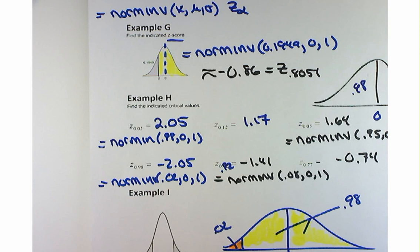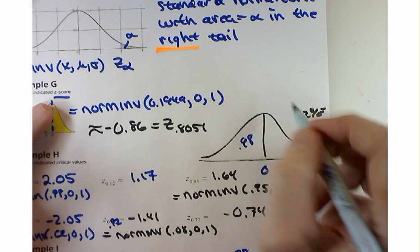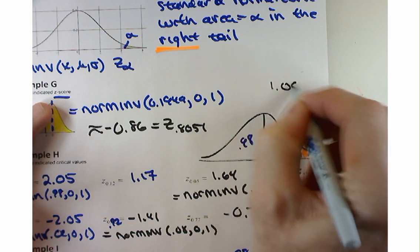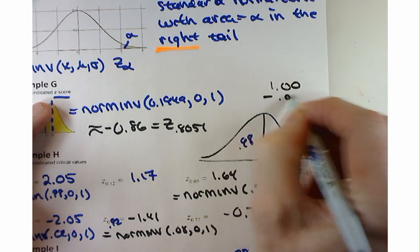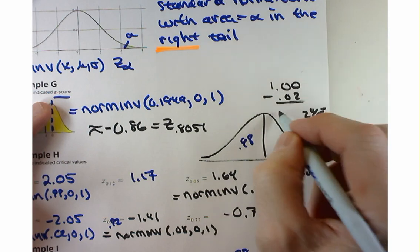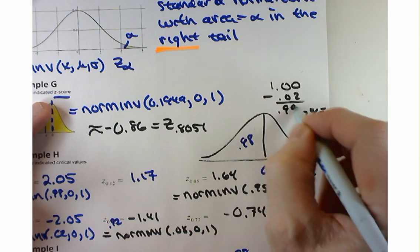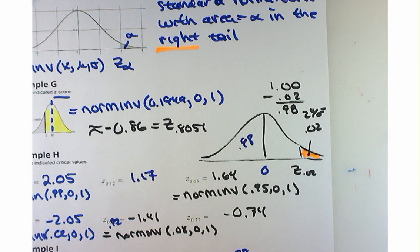Google tells you the Z score where 98% of the area is to the left — that's 2.05. Google is always going to work with the area in the left tail for these normal curve calculations. So 1 minus 0.02 gives you 0.98 — that's exactly what we're doing.